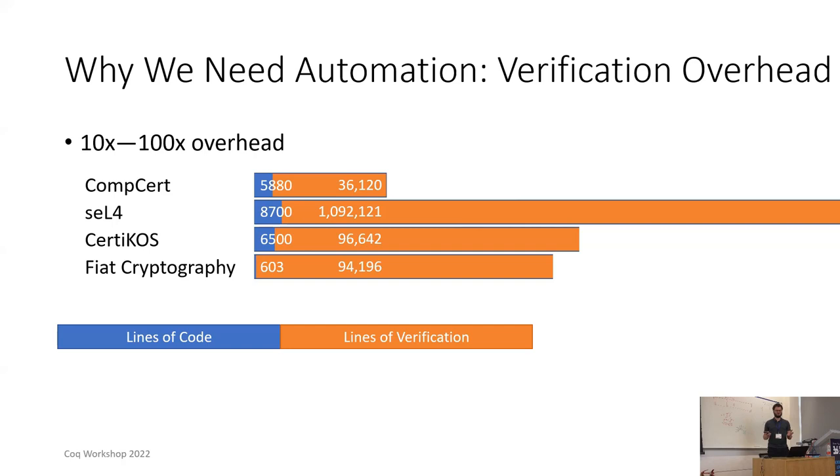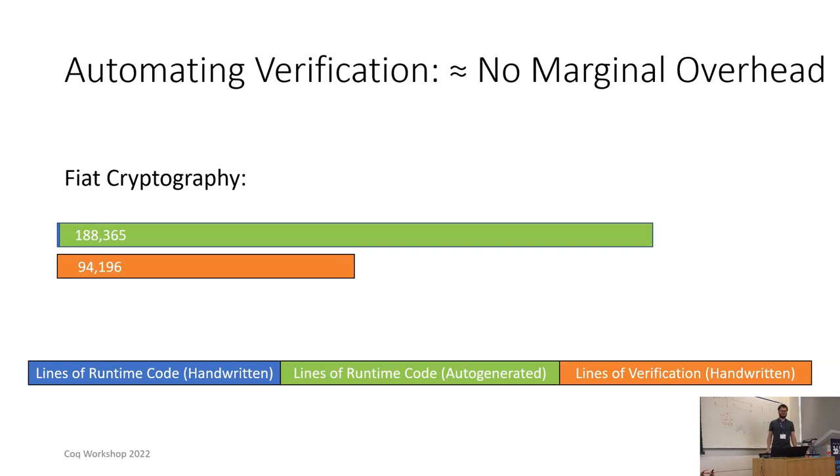Moreover, many industrial-scale proofs are full of boring and tedious case analysis. Proving that integer addition doesn't overflow in a couple thousand slightly different cases is not anyone's idea of a fun proof. Adequate automation, by contrast, allows verification of new code with negligible marginal overhead. Here you can see that in my main project we managed to have more lines of code that we are verifying than we spend verifying that code.